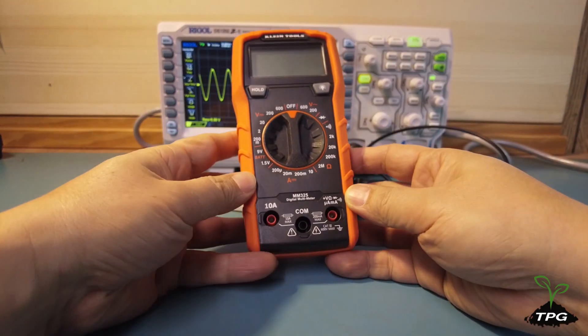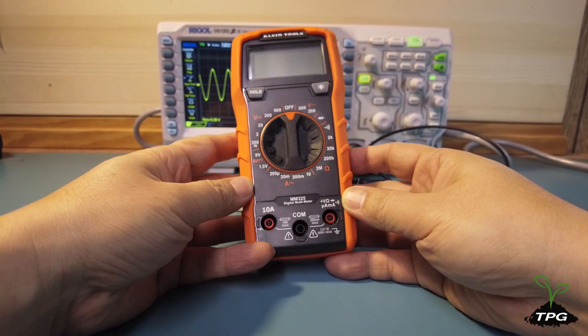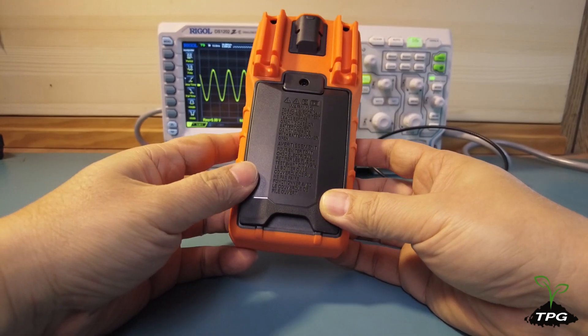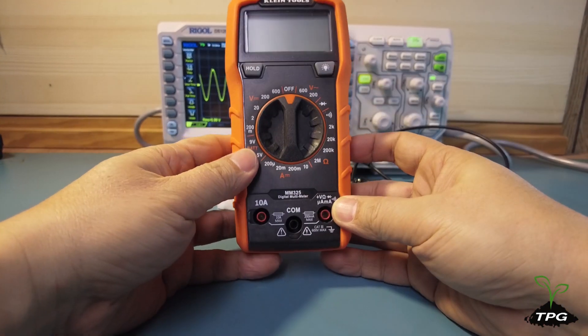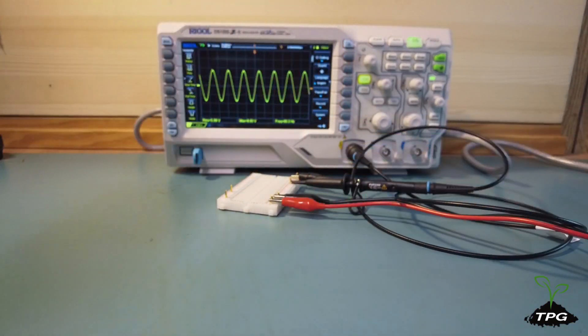Just like oscilloscopes, multimeters also have bandwidth limitations. However, the user manual of this digital multimeter doesn't provide bandwidth information in the electrical specifications section. In general, most multimeters are designed to measure AC signals within the range of a few hertz to several kilohertz.